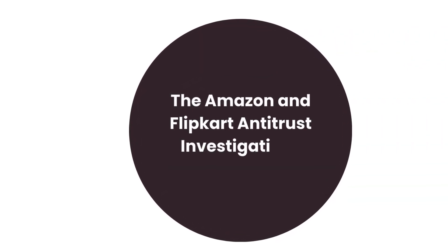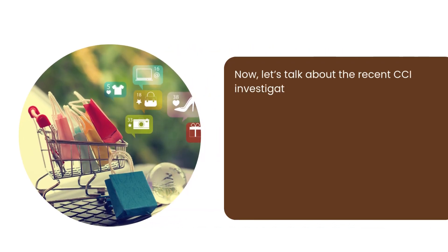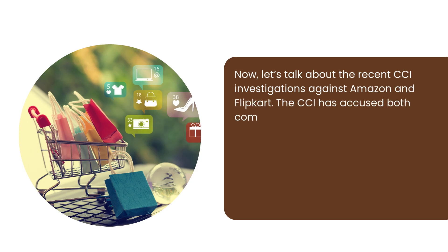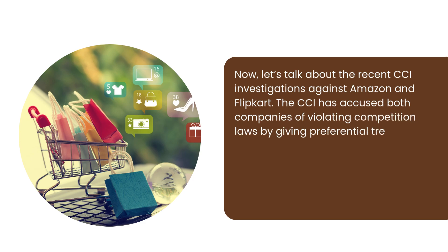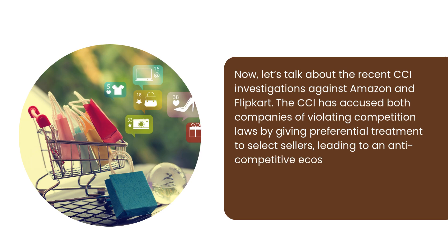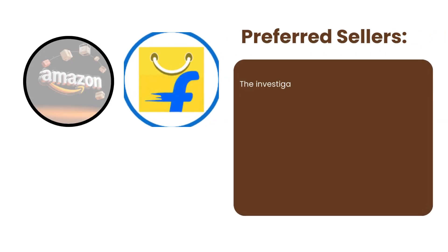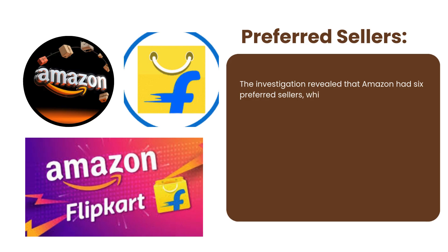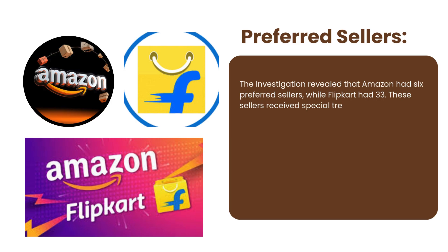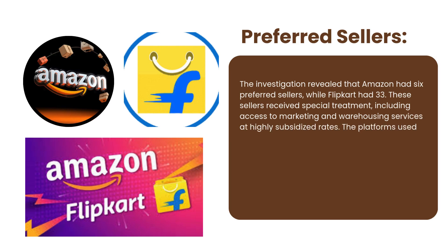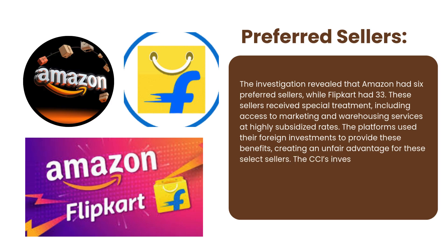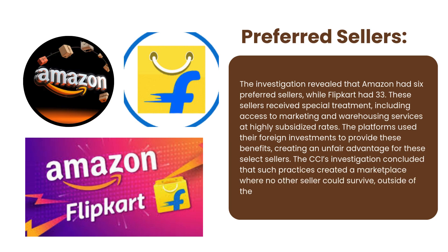Now let's talk about the recent CCI investigations against Amazon and Flipkart. The CCI has accused both companies of violating competition laws by giving preferential treatment to select sellers, leading to an anti-competitive ecosystem. These findings have significant implications for India's growing e-commerce sector. The investigation revealed that Amazon had 6 preferred sellers while Flipkart had 33. These sellers received special treatment, including access to marketing and warehousing services at highly subsidized rates. The platforms used their foreign investments to provide these benefits, creating an unfair advantage. The CCI concluded that such practices create a marketplace where no other seller could survive outside of the preferred circle.